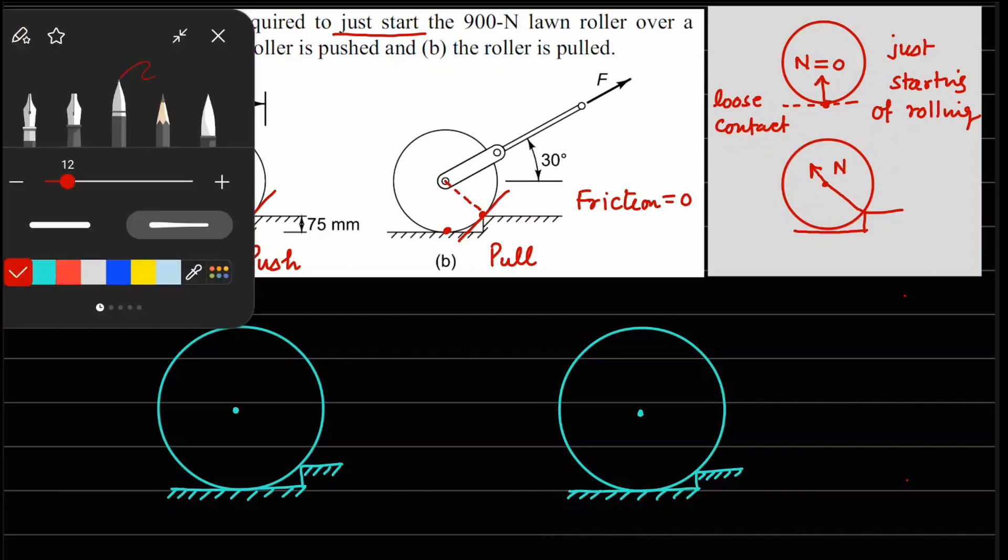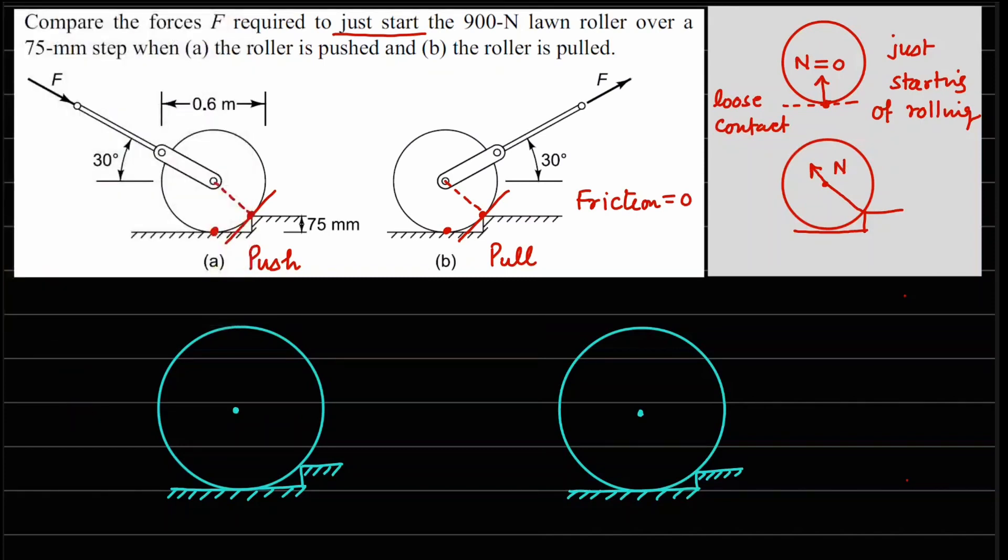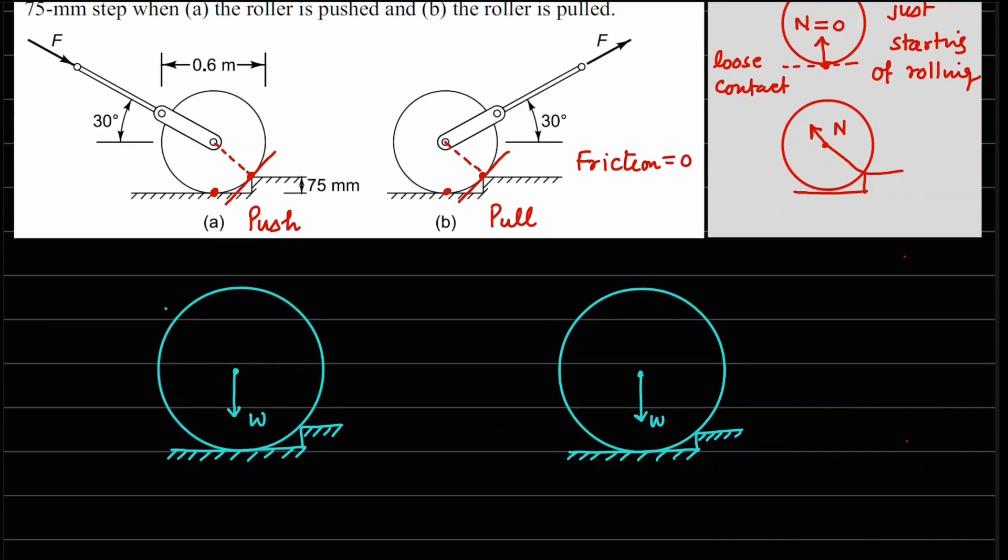Now when we start drawing the free body diagram of both of these cases, in both cases we are going to get a vertically downward force which is the weight of the roller. Then you are going to get this normal reaction which is coming from the step corner. And in this case also we are going to get this normal reaction, which is this. Since there are two cases, I am going to name this as N1 and this one as N2.